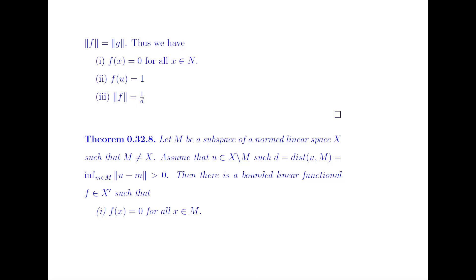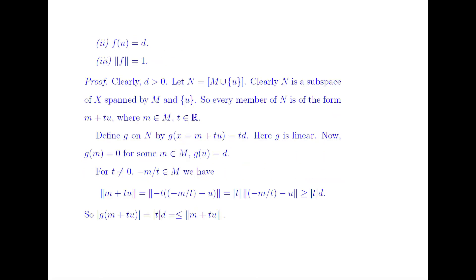Now let M be a subspace of a normed linear space X with M ≠ X, and assume U ∈ X \ M such that D = ‖U − M‖ > 0 (not necessarily a closed subspace). Then there is a bounded linear functional F in the conjugate space of X such that F(x) = 0 for all x ∈ M, F(U) = D, and norm(F) = 1. Let N be the subspace of X spanned by M and U, so every member of N has the form m + tU.